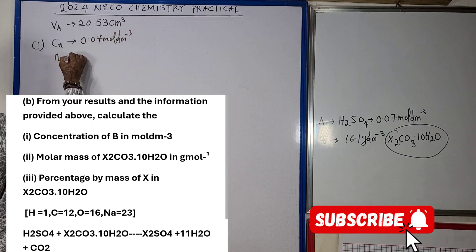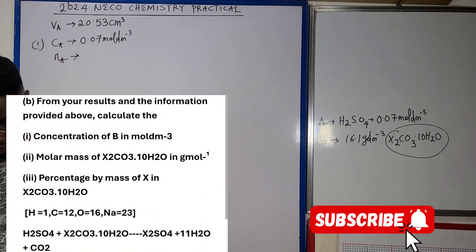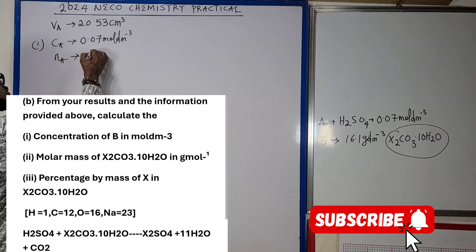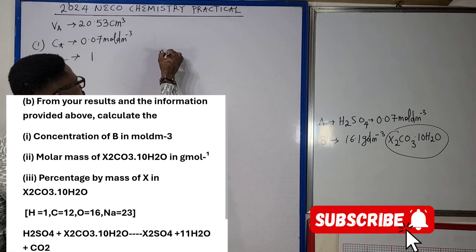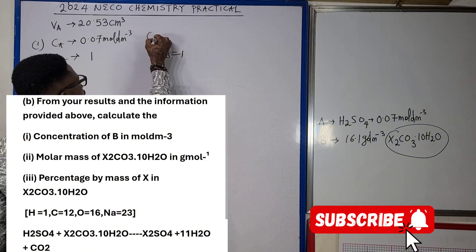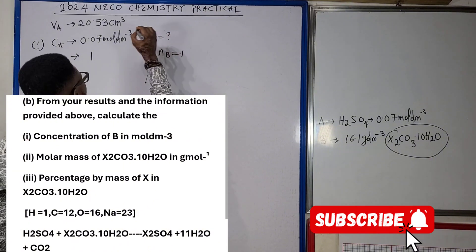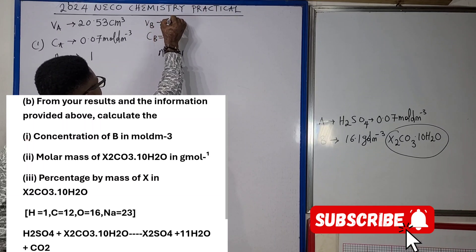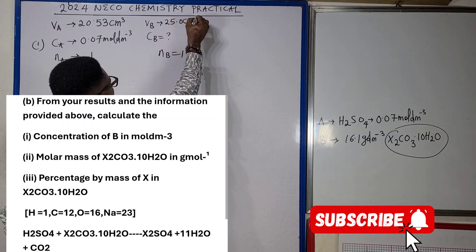For Roman figure one B, Roman figure one, we're looking for CB. This is our VA, our CA from the question is 0.07 mole per dm³, and our NA from the equation, if you look at the question, it has its equation. AA is 1, NB is also equals to 1.